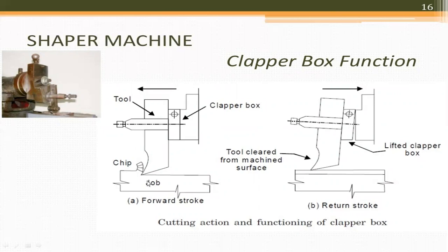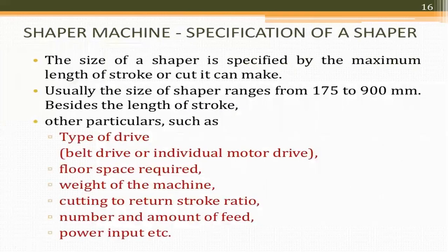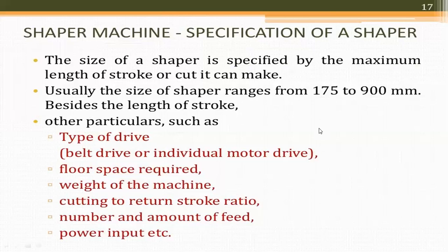During the forward stroke, a chip is formed as the tool cuts the workpiece. During the return stroke, no cutting occurs — the tool simply returns to the starting position. The size of the Shaper is specified by the length of stroke, which typically ranges from 175 to 900 mm. Other specifications include type of drive (belt drive or individual motor drive), floor space required, weight of the machine, cutting-to-return stroke ratio, number of strokes per minute, and power input.